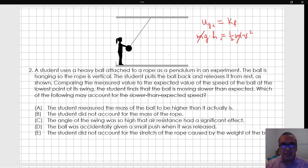Clearly, the mass cancels out, which means that the speed does not depend on the mass. Therefore, a wrong measurement in the mass should not affect the measurement of the speed.